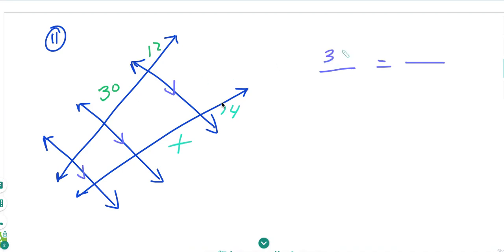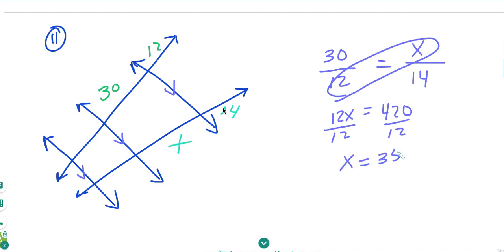30 over 12 both on the same transversal is equal to X over 14 on the same transversal in the same locations. We're going to butterfly. 12X is equal to 420 divide by 12. X is equal to 35.